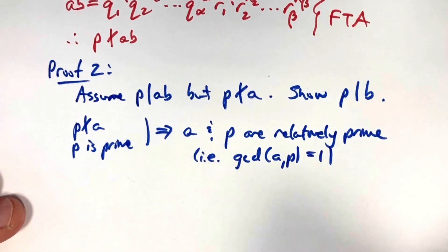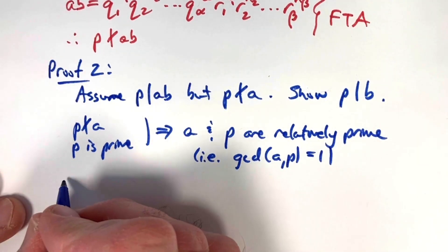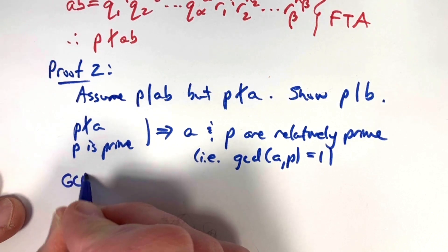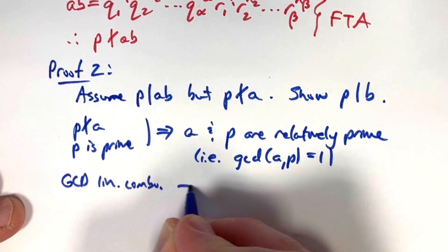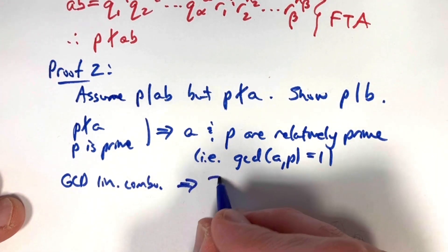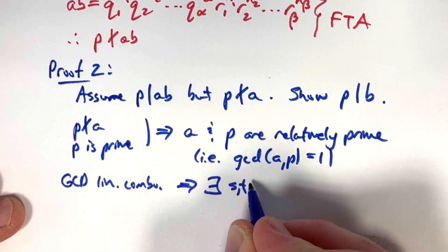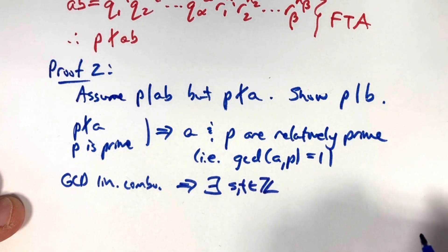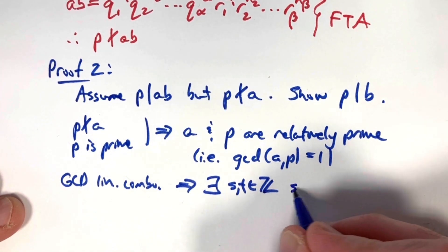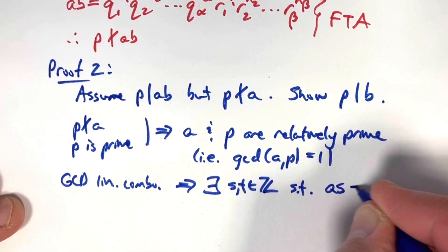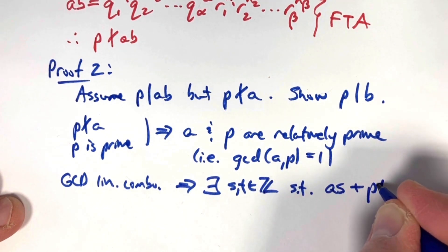Now we apply this GCD is a linear combination theorem. GCD linear combo theorem implies that we can find there exists integers s and t, one of which will be a negative number, but that's not a big deal, such that a times s plus p times t equals that GCD one.